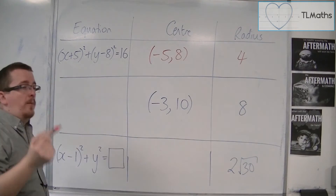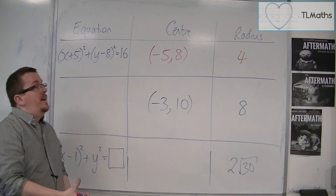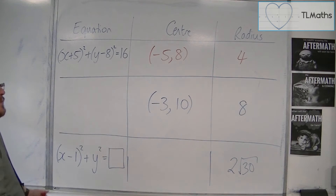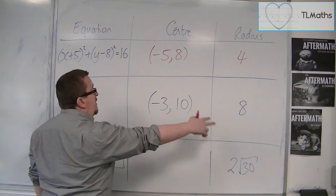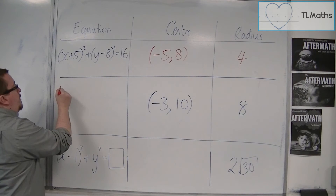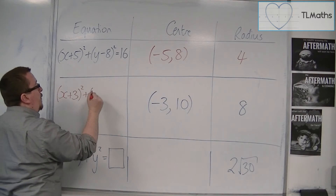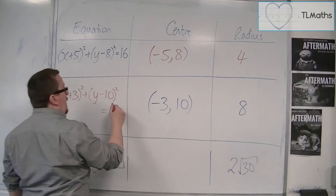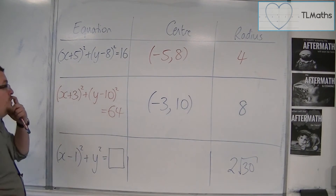Notice how the radius is not plus or minus 4. You can't have a negative radius because a radius represents a distance — you can't have a negative distance. So if we're given the centre and the radius, then the equation would be x plus 3 squared plus y minus 10 squared equals 8 squared, so 64. And that is the equation.